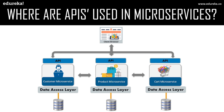Each service has its own API through which it communicates with the client. For example, if you request your own customer details, the API Gateway decides which service to route the request to. Since we want customer details, the request goes to the customer microservice, the required data is retrieved, and the API sends back the response. If data from multiple services is needed, each microservice generates its portion and together they send back the complete response.